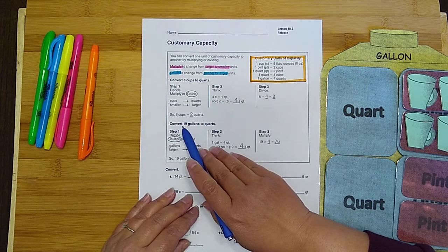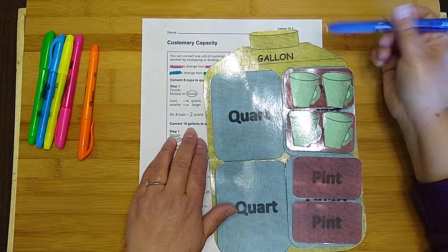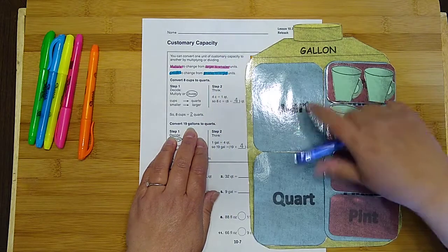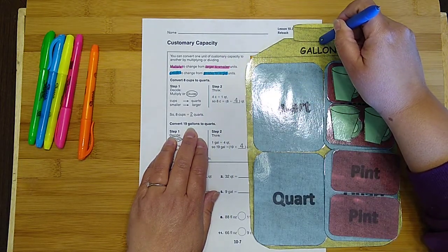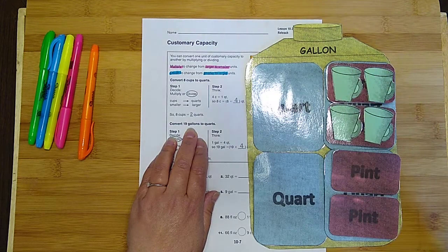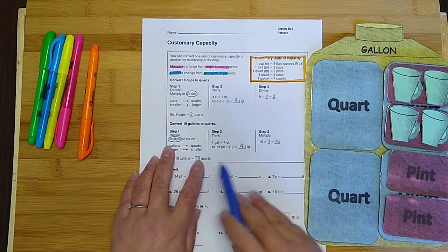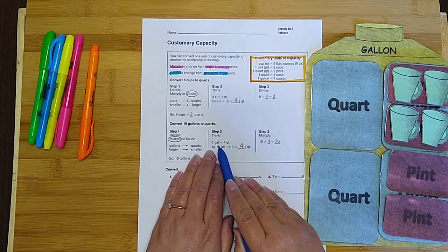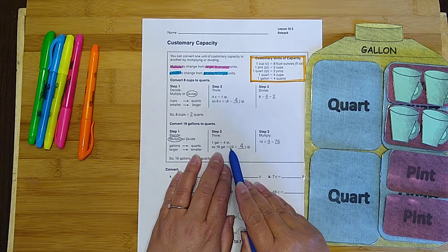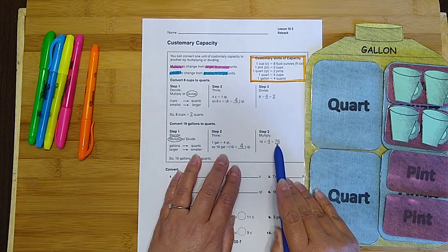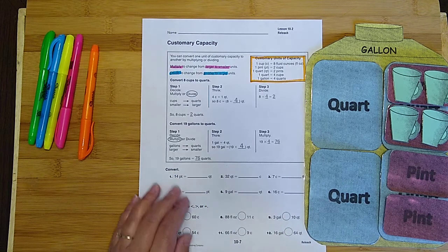Then they want us to convert 19 gallons to quarts. So a gallon is super huge. It's right here. This is our gallon. And then a quart is right here. It's smaller. So we're going from larger to smaller, which means we are going to multiply. So they circled the word multiply. Think, one gallon equals four quarts. So 19 gallons equals 19 times 4. And they did the math here and it's 76. So 19 gallons is equal to 76 quarts.